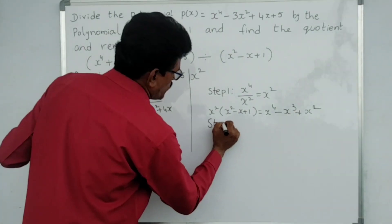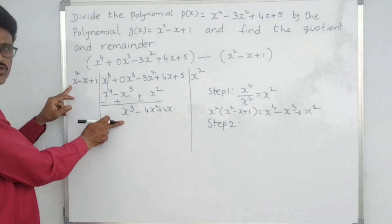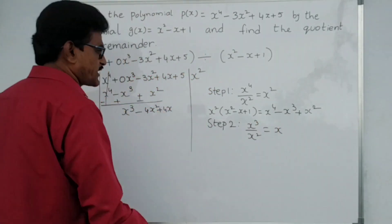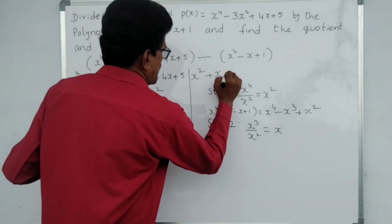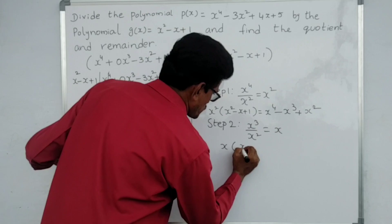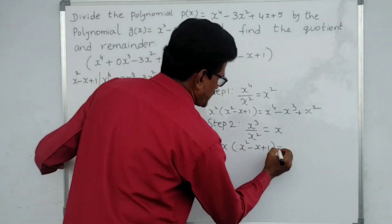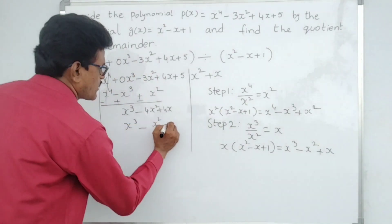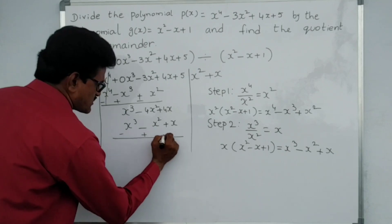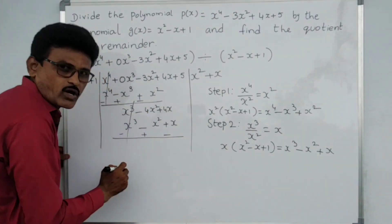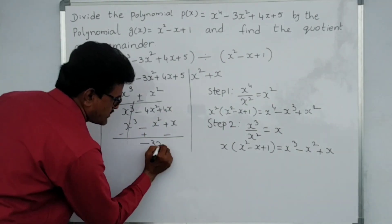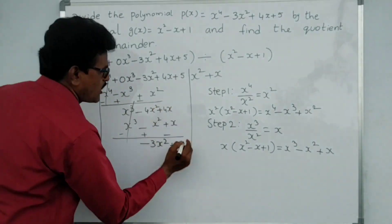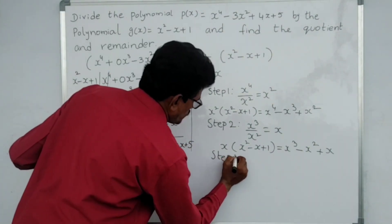Step two: x³ divided by x² gives x. Write plus x. Now x into (x² minus x plus 1): x³ minus x² plus x. Write x³ minus x² plus x. Do subtraction — change symbols — first terms cancel; minus 4x² plus x² gives minus 3x²; plus 4x minus x gives plus 3x. Bring down plus 5.